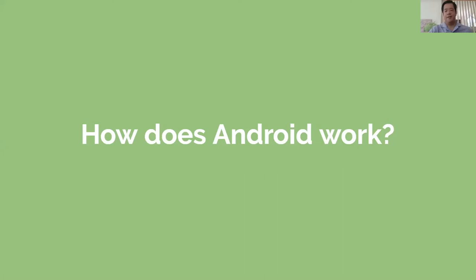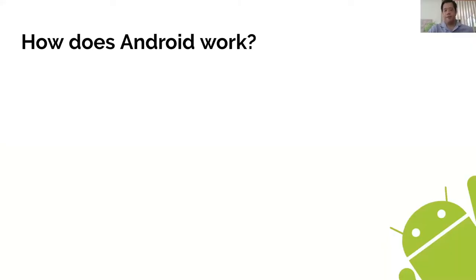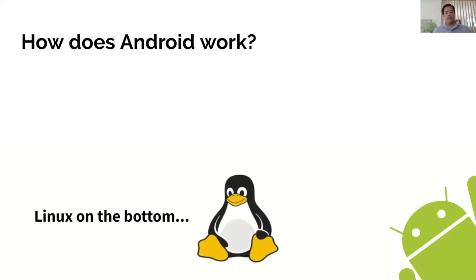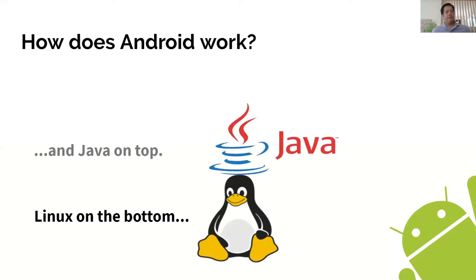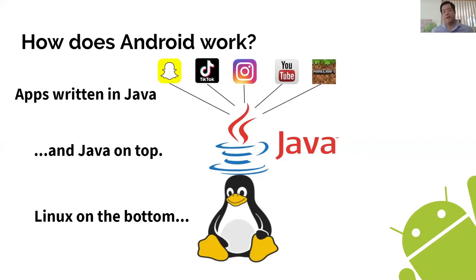So how does Android work? Breaking it down, the fundamental component of Android is actually Linux. When Android was first built, it was built on top of Linux because Linux is open source just like Android, and it's an operating system engineers and developers use for free. However, Linux is not always the most user-friendly or readable, so there's a layer of Java on top. Java is known for being very readable and user-friendly, and as a result the apps on Android are written in Java.